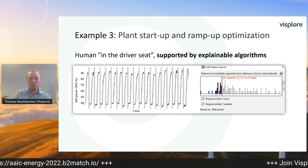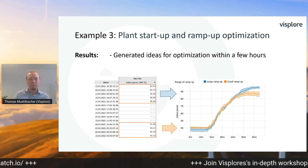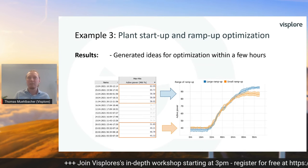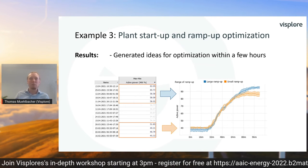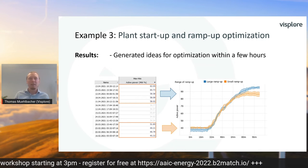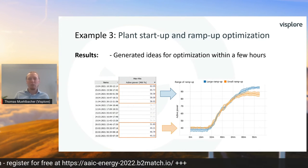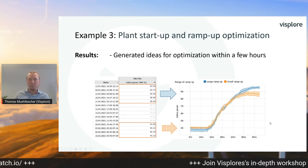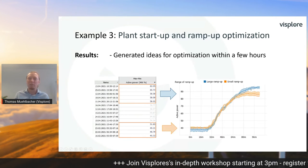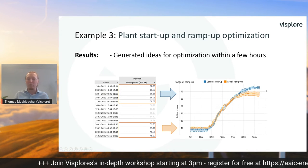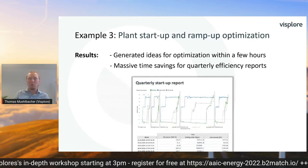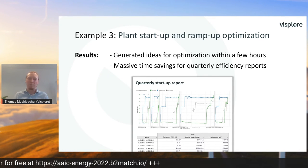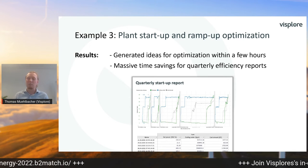For the first time, the domain experts can do such analysis and they generated ideas for optimization within just a few hours. For example, some ramp-ups were identified that consumed a lot of gas but resulted only in a smaller power increase — the orange ones here. In other words, these orange ramp-ups were less efficient than the blue ones, and the experts can follow up on this. Also, the segmentation approach gives them massive time savings for the quarterly reports of ramp-up efficiency, which were manual so far.